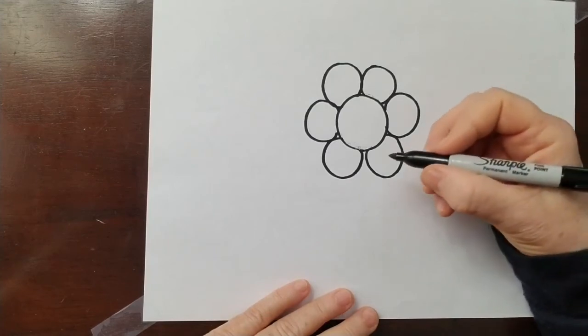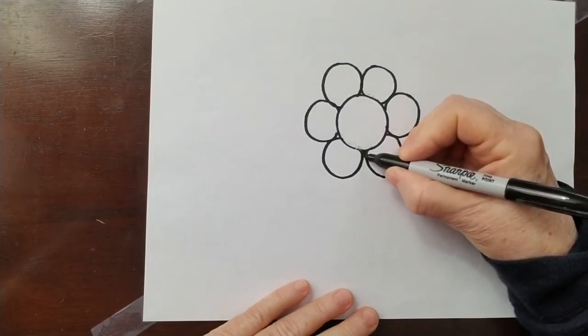Next, I want to draw the stem of the flower. It's a vertical line.